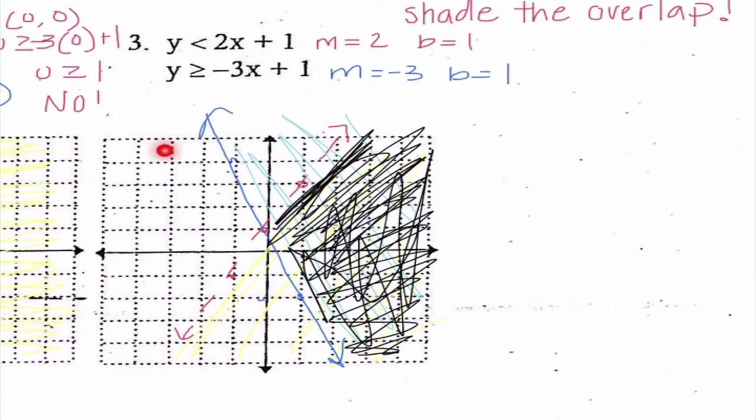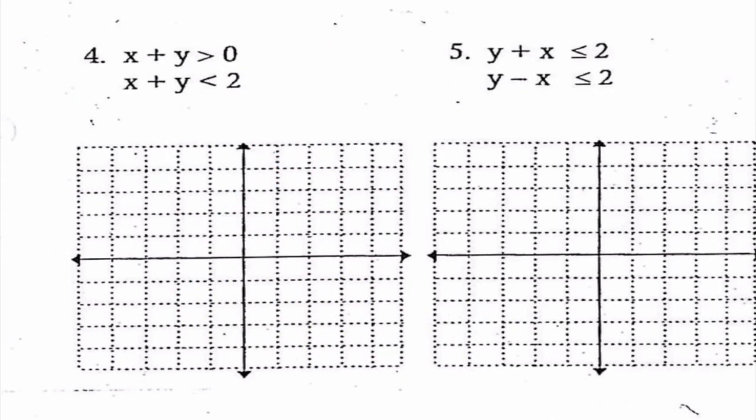This is what our answer looks like. We need to be very clear and shade very dark where we think the overlap happens, to make it evident that those are our solutions.